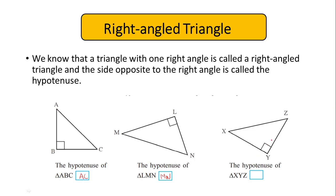In triangle XYZ, angle Y is 90 degrees. So XZ will be the hypotenuse.